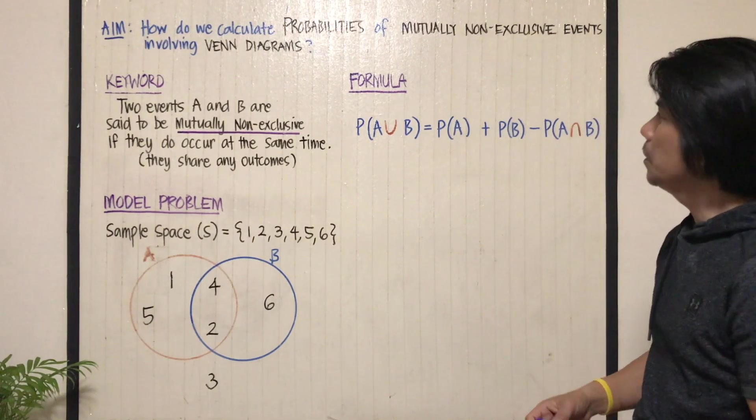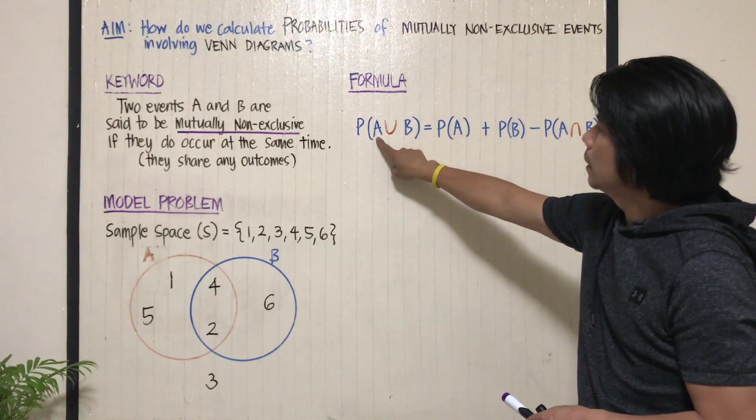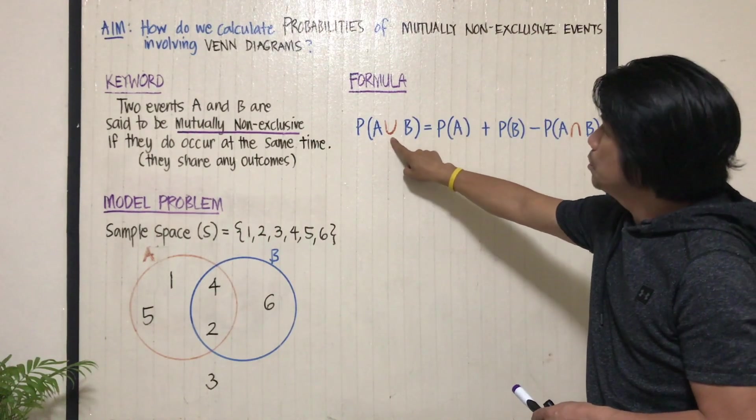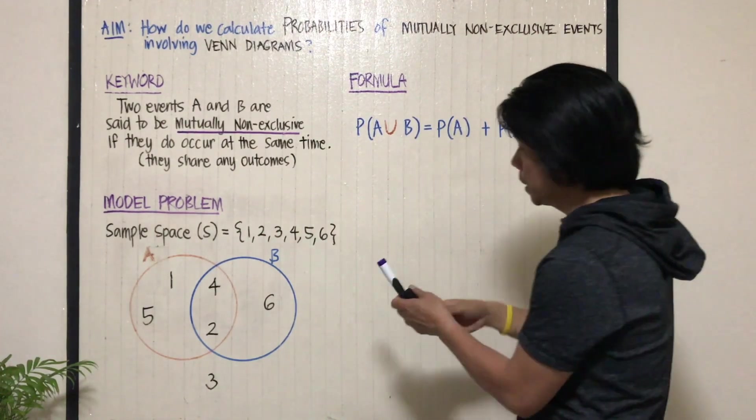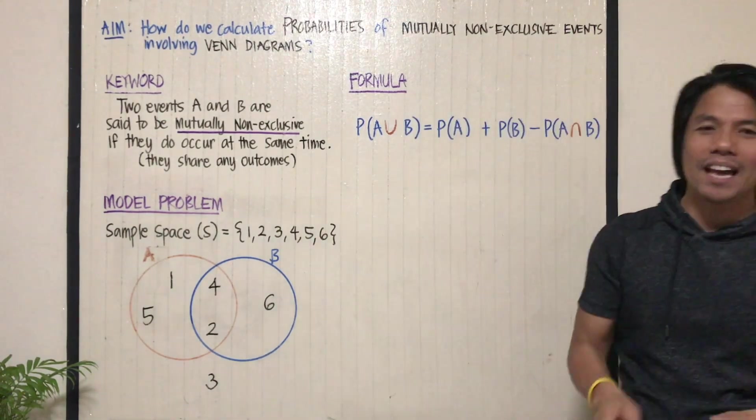Now, how do we find the probability of event A union B? When we say union, that symbol.